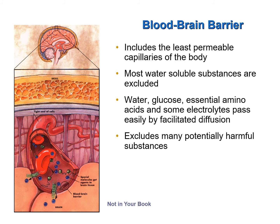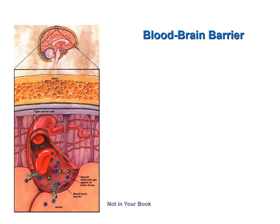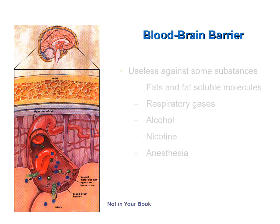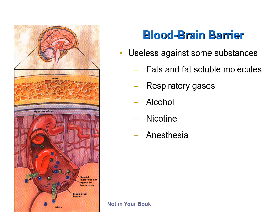The blood-brain barrier is a bit of a double-edged sword, however, because it also makes it difficult to deliver medications to the brain and spinal cord through the blood. While the blood-brain barrier is very effective at excluding water-soluble substances, it is ineffective against fat-soluble substances. Any fat-soluble molecules can pass through the blood-brain barrier. Respiratory gases, alcohol, nicotine, and many anesthetics that are fat-soluble can all access the brain by breaching the blood-brain barrier.